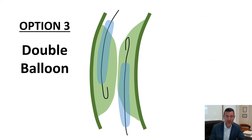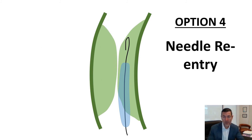If that fails, the next step is the double balloon technique, using a balloon from both below and above, aiming to melon-seed the two balloons against each other to open up the membrane between the two channels. And if all else fails, a needle re-entry system can be used: a balloon is inflated from below, and a needle-based re-entry device such as an Outback or Pioneer catheter is advanced from above. The needle penetrates into the balloon, followed by a wire, establishing through-and-through access.